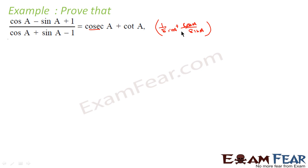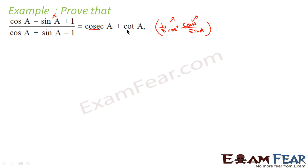So if you divide everything by sin A, cos A becomes cos A by sin A, sin A by sin A gives 1, and 1 by sin A is cosec A. So somehow if we divide both numerator and denominator by sin A, we will get something of the form cosec A and cot A. That is what we can feel — because cot A is cos A by sin A and cosec A is 1 by sin A. So let us divide by sin A.